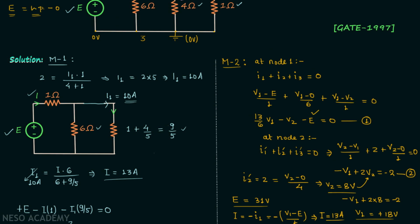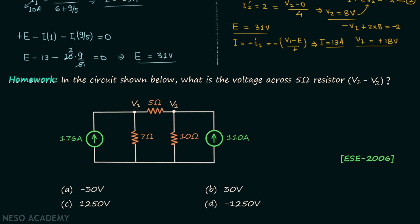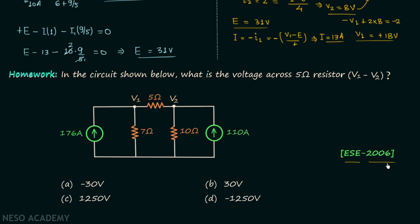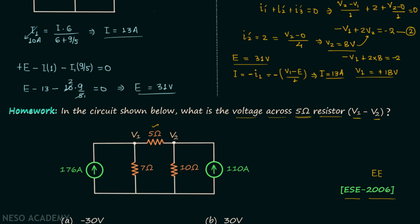Now we will move on to the homework problem, taken from ESE 2006 Electrical Engineering objective paper. We need to find the voltage across the 5 ohm resistor, which is V1 minus V2. Post your answer in the comment section. This problem requires solving two-variable simultaneous equations using a calculator, and I will make a separate video explaining how to do that.